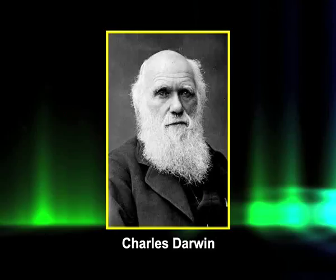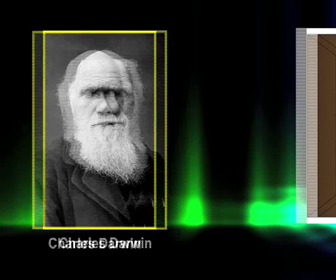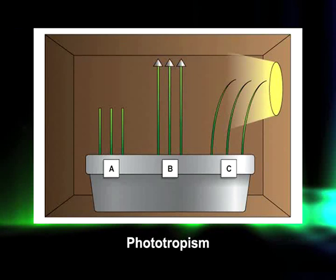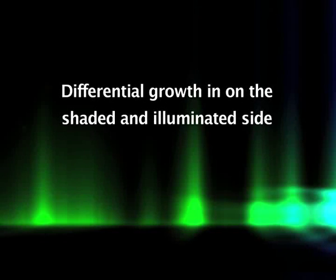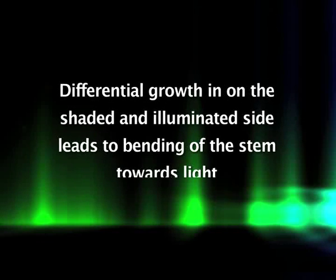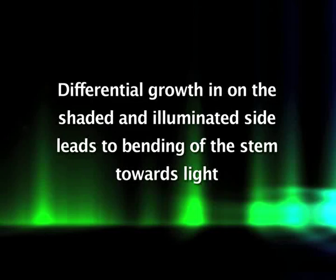Charles Darwin was among the first scientists to get involved in plant hormone research. Charles Darwin and his son Francis studied bending of the coleoptyles towards a unilateral source of light — a phenomenon known as phototropism. Bending of coleoptyles during phototropism is mediated by more growth on the shaded side compared to the illuminated side, which leads to bending of the stem towards the light.